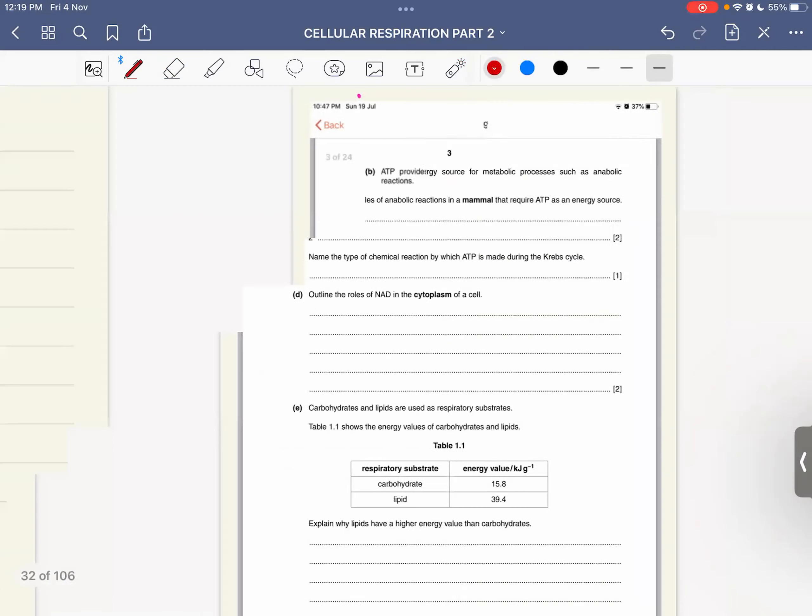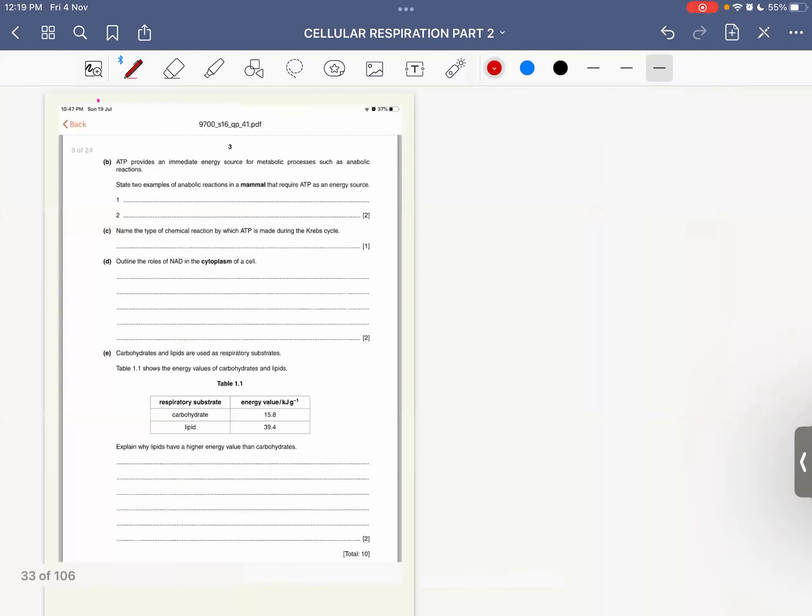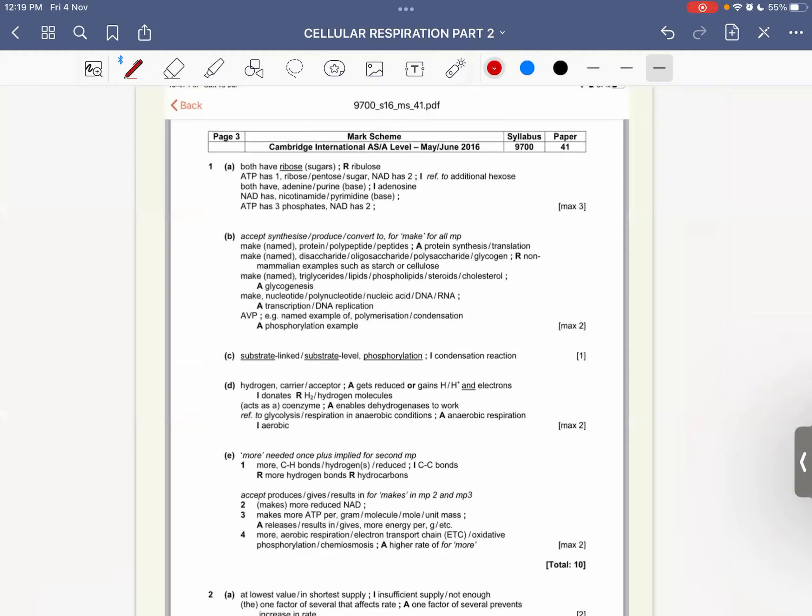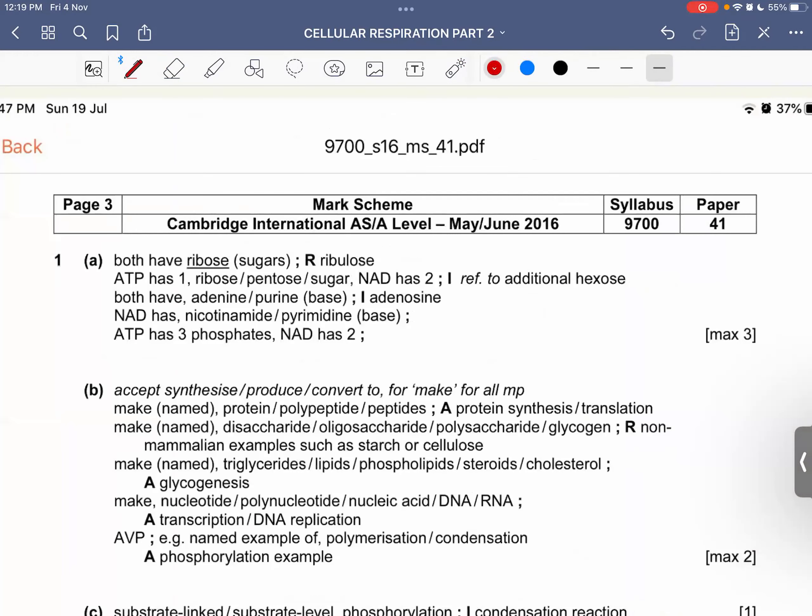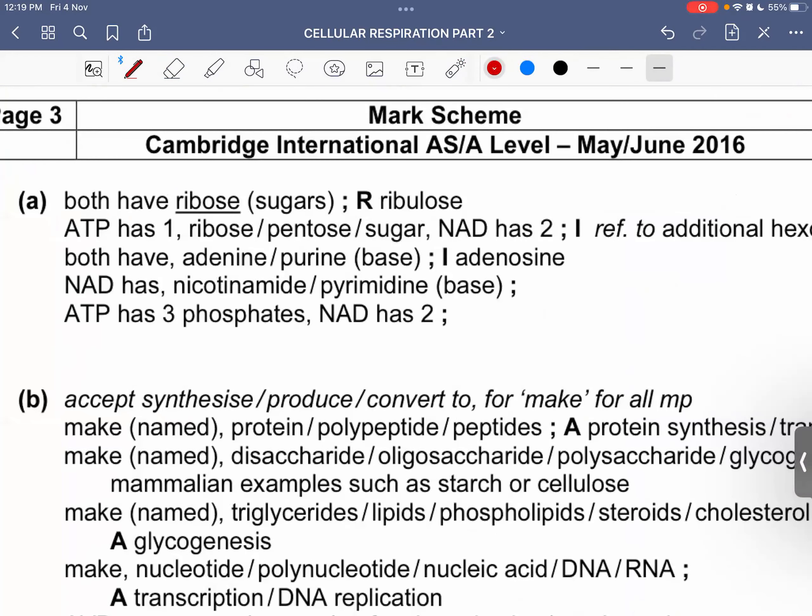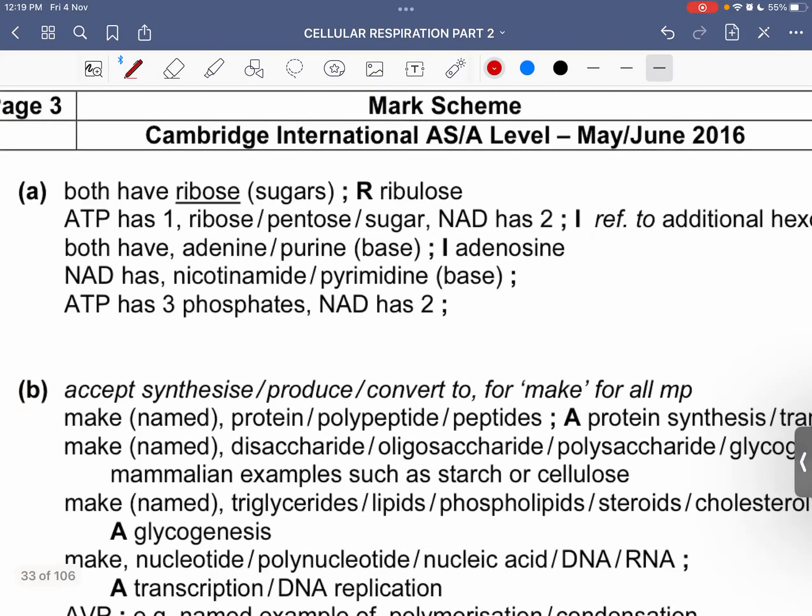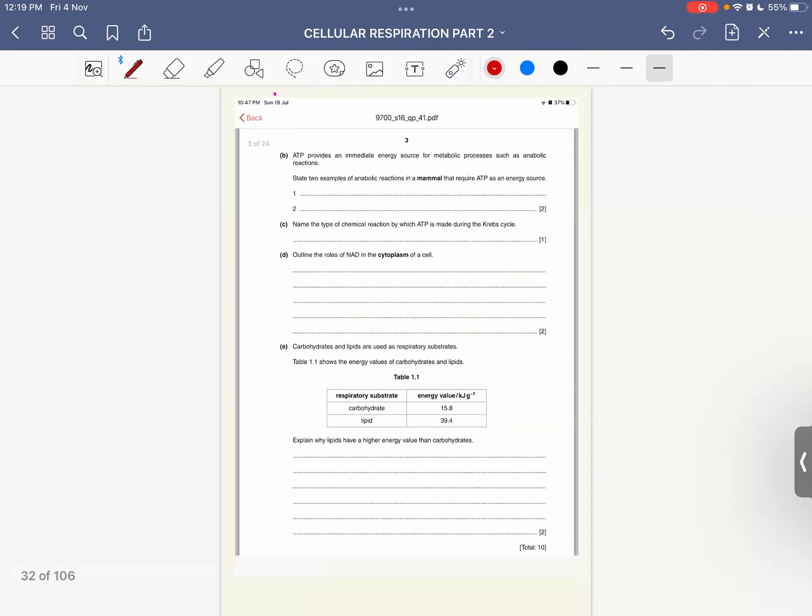Let's look at the answers quickly to see whether you were correct or not. NAD has ribose sugars - yes. ATP has 3 phosphates, NAD has 2 phosphates - yes. NAD has nicotinamide. ATP has 1 ribosugar, NAD has 2. Both have adenine base - yes.